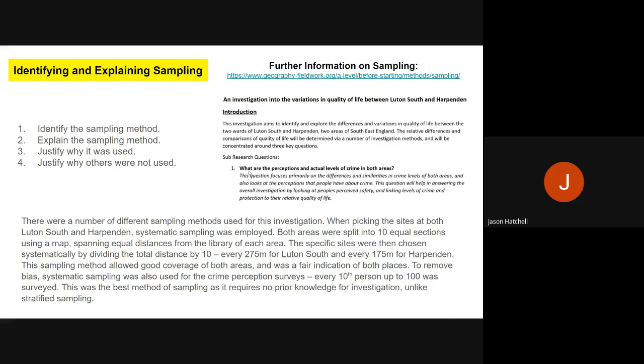There's now a paragraph on screen taking us through one of my methods, the crime surveys, and how I chose the sampling. As you can see, when picking the sites both at Luton South and Harpenden, systematic sampling was used. Both areas were split into 10 equal sections. The specific sites were chosen systematically by dividing the distance by 10, so every 275 meters in Luton South and every 175 meters in Harpenden, giving me my 10 sites.